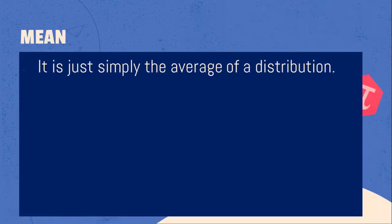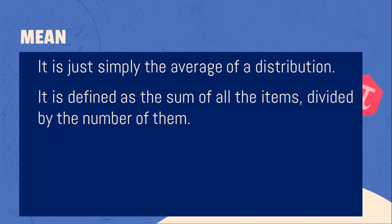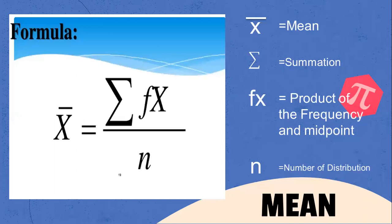Let's now discuss what is mean. Mean is simply the average of a distribution. It is also defined as the sum of all the items divided by the number of them. The formula for mean grouped data is: mean is equal to the summation of fx over n, where x-bar is the mean, fx is the product of the frequency and midpoint, and n is the number of distribution.